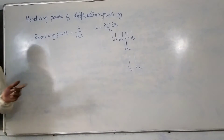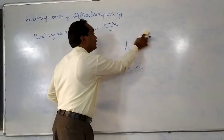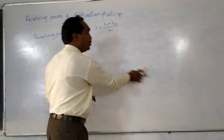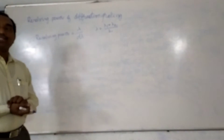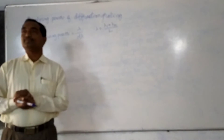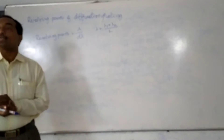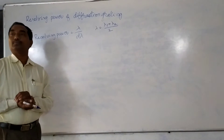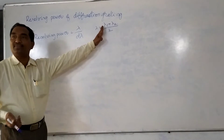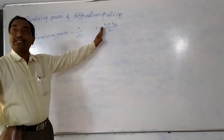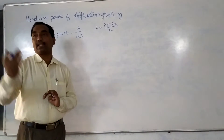By using this principle, we can determine the resolving power of the grating. To observe any two spectral lines individually, according to the Rayleigh criterion, the principal maximum of one spectrum must coincide with the first minimum of the second spectral line.